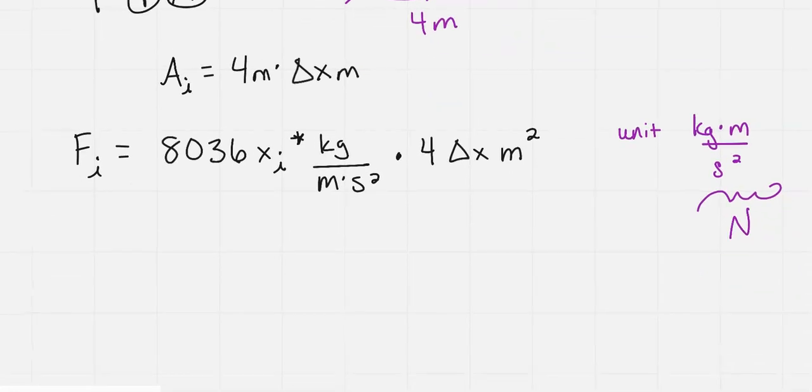Now if we were to write this as a Riemann sum, which the book wants you to do, and I think is a very good way to write this, and you'll have to do this on exams usually too, is we go from i equals 1 to n of 8,036 x sub i star, I'm going to take off the units now, times 4 delta x. And so if we added up all those little slices, we'd get the total force.